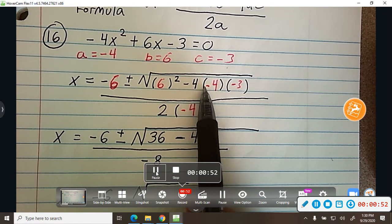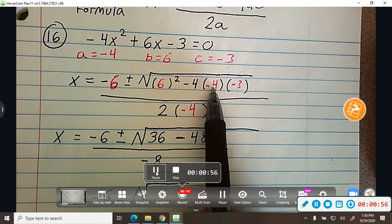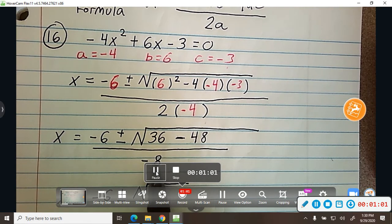I did negative times negative times negative is a negative. And 4 times 4 times 3 is 48. And then 2 times negative 4 is negative 8.